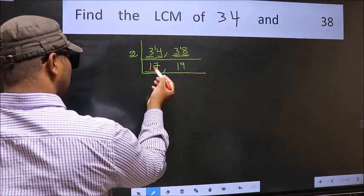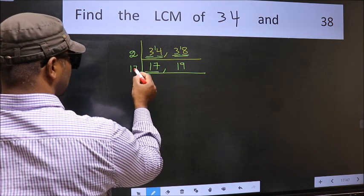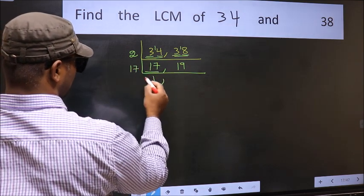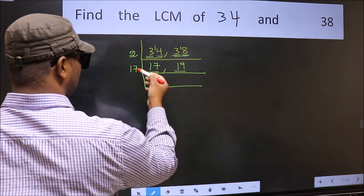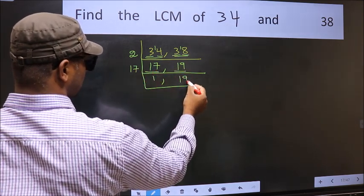Now here we have 17. 17 is a prime number, so 17 once 17. The other number 19, not divisible by 17, so we write it down as it is.